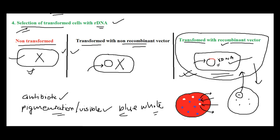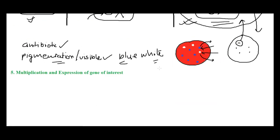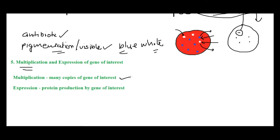You can also use blotting techniques or assays for biological activity to find your desired colony. Once you have selected those colonies, they will still be in limited numbers, so the next step is to multiply them to get many copies of that particular gene of interest.